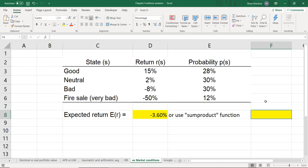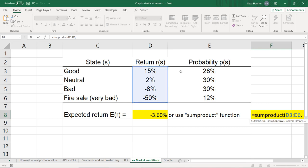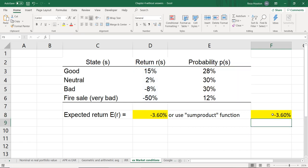Now the sum product function does exactly what I just did, but all you have to do is highlight the two columns that are going to be multiplied by each other, and Excel will sum up all of those products. So sum product, and each of these columns is referred to as an array. Our first array is the returns, our second array is the probabilities, and we get the same result. So the sum product function is a great way to save yourself some time when you're using Excel.